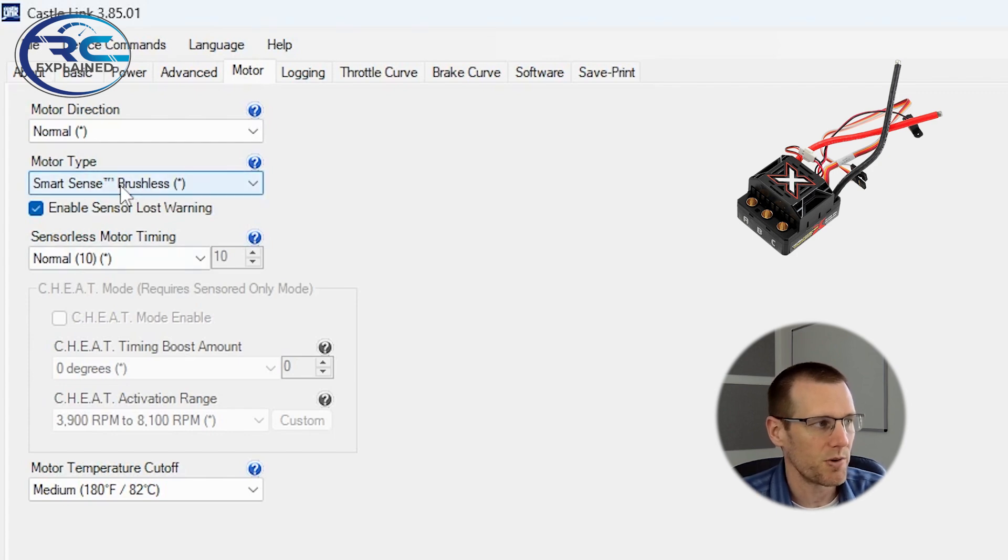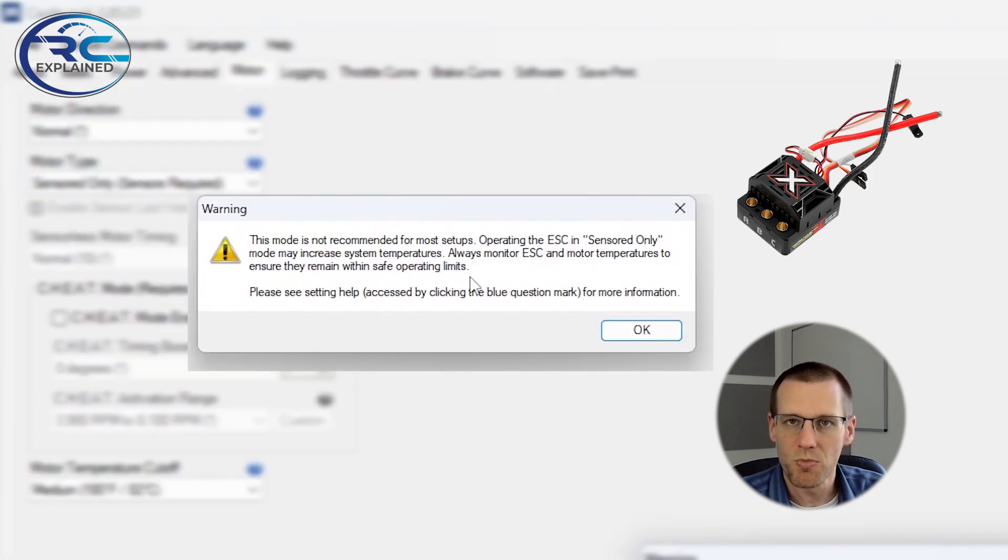Now I'm going to show you what happens if we actually go in here, and we select censored only. We get this error message, it's not even an error message, it's more of a warning. And it says this mode is not recommended for most setups, operating the ESC in censored only mode may increase system temperatures, always monitor ESC and motor temperatures to ensure they remain within safe operation limits.